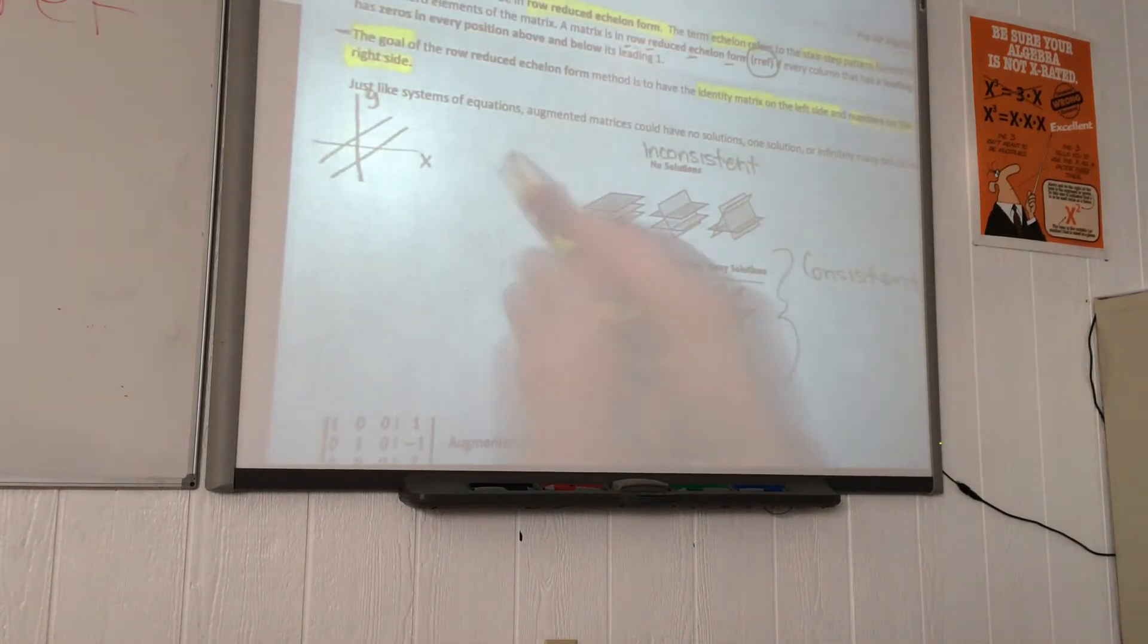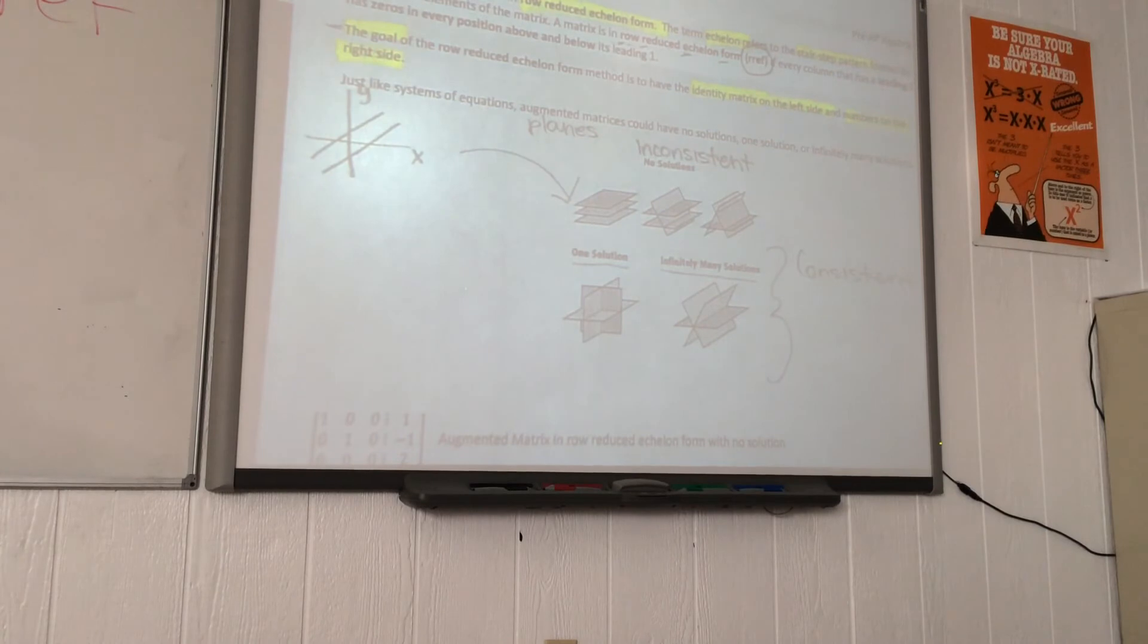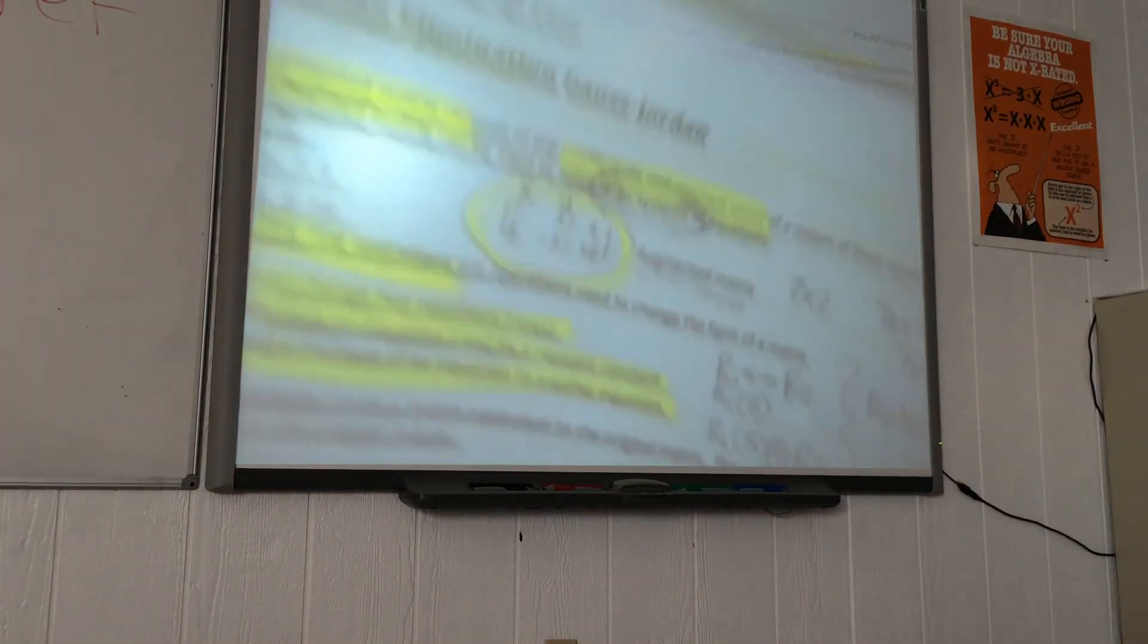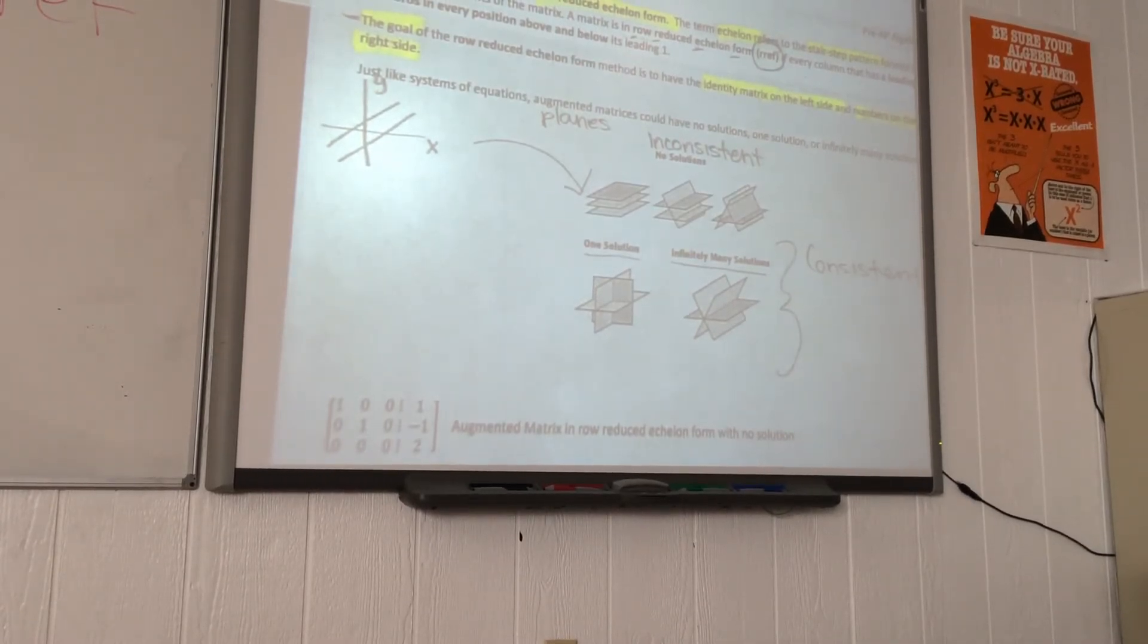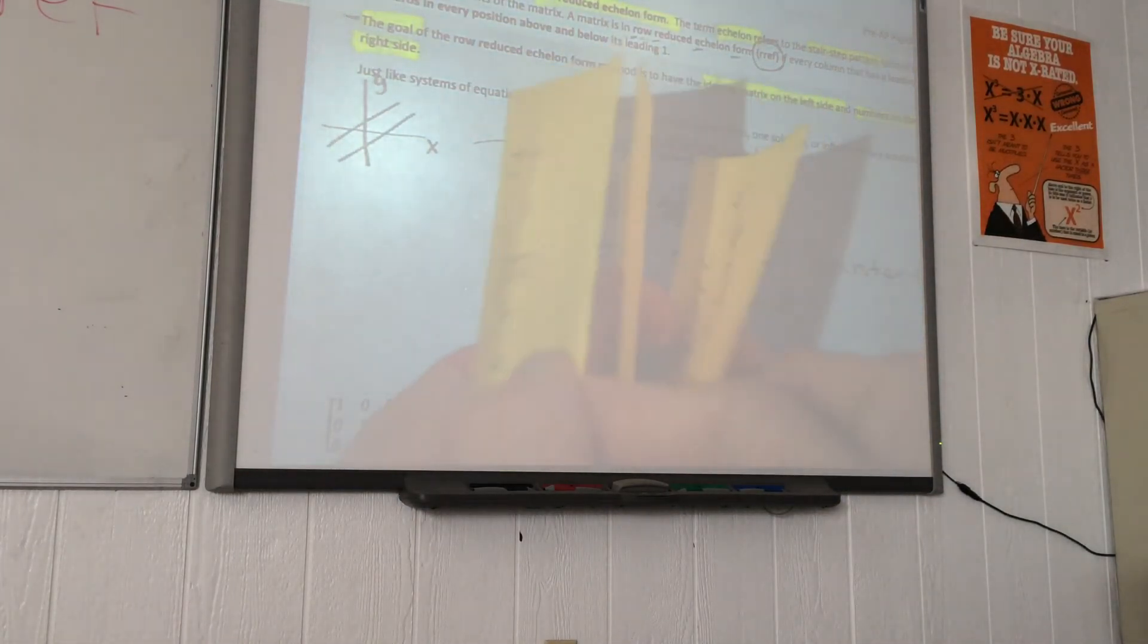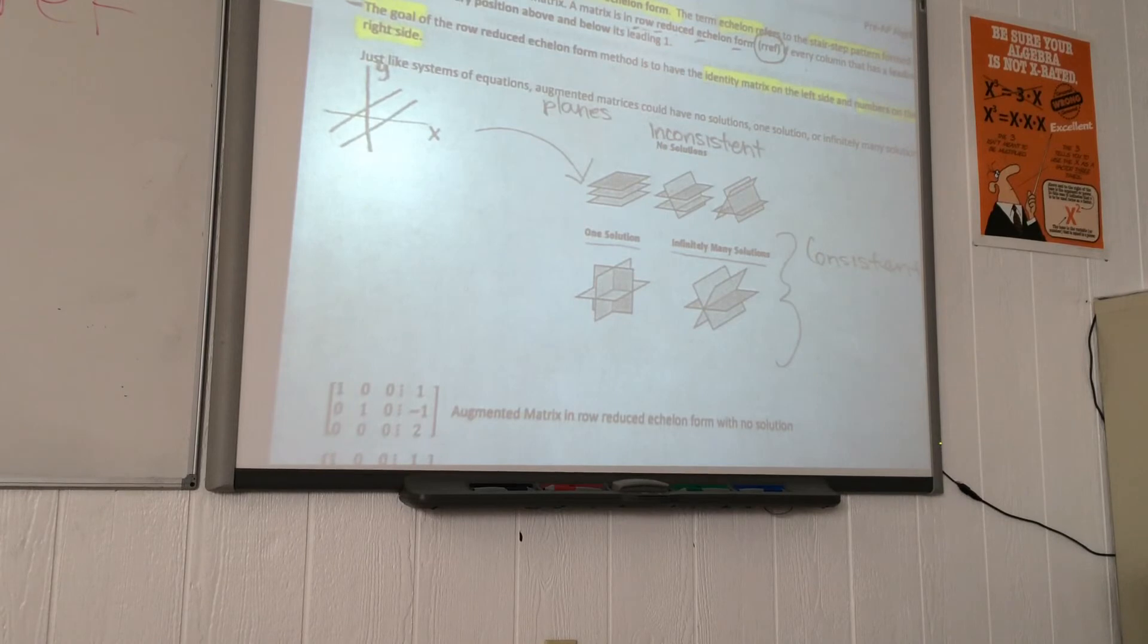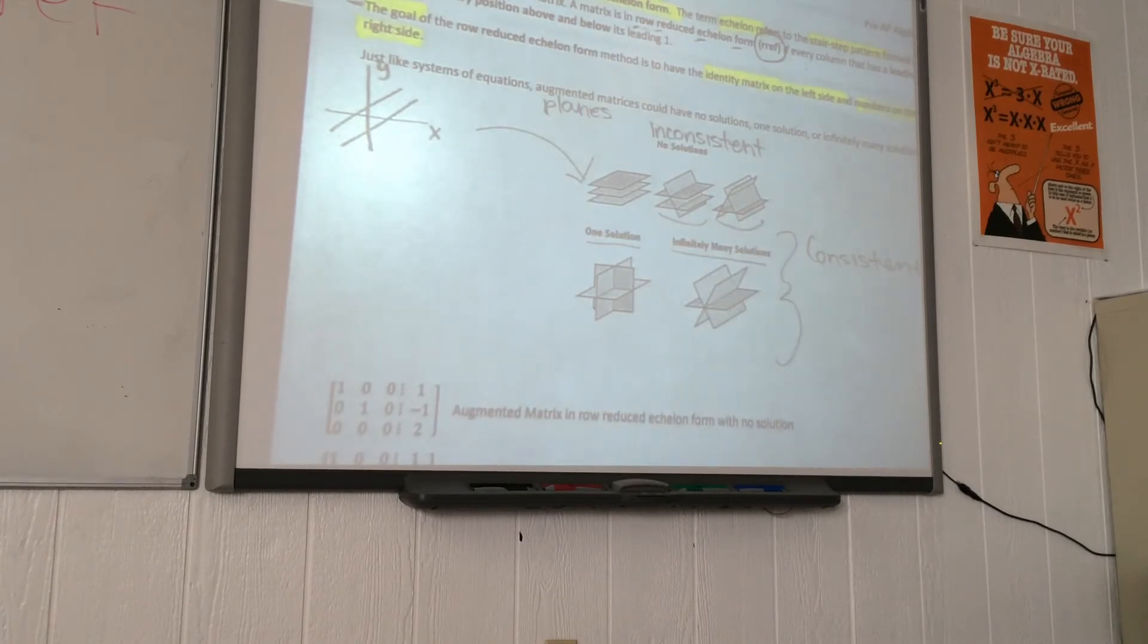When we translate that into a 3x3 system, we're not going to talk about lines anymore, we're going to talk about planes. If you imagine three papers parallel like that. That's what the picture is representing here. Another way is if they don't intersect all three at the same time, like here and here. These ones are called parallel planes.